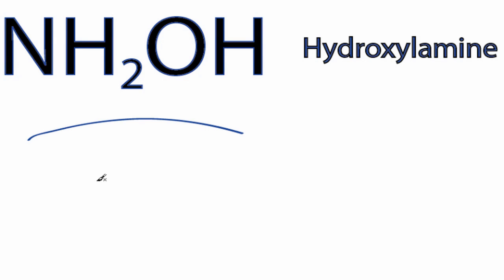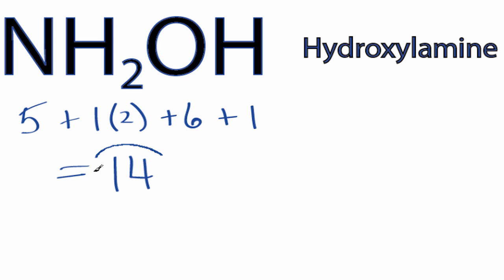This is the NH2OH Lewis structure. Nitrogen has five valence electrons, we have one for hydrogen, we have two hydrogens, plus six for oxygen, and then one for the hydrogen on the end there, for a total of fourteen valence electrons.